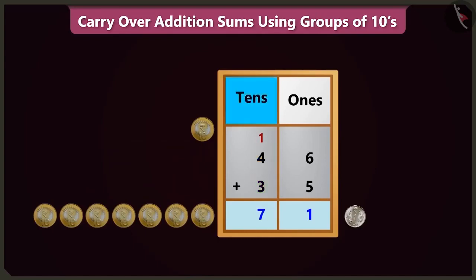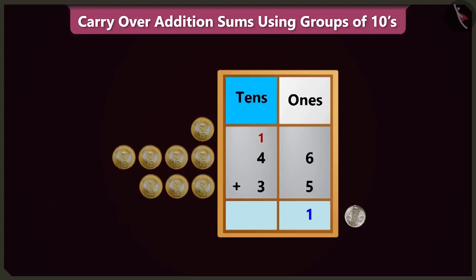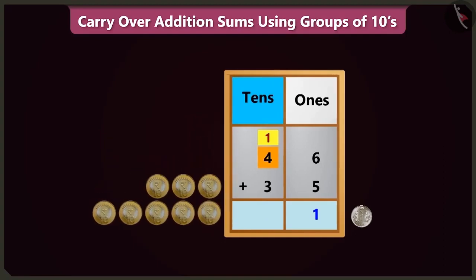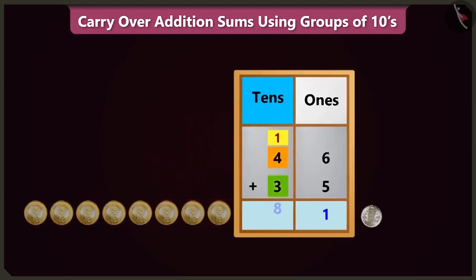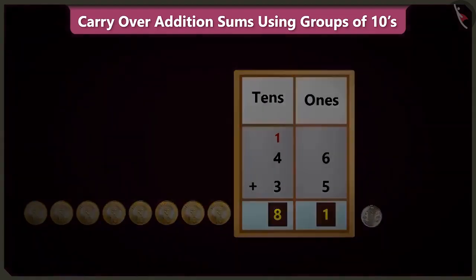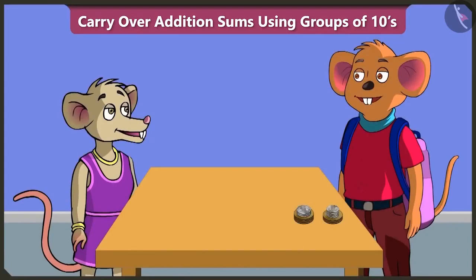Chichi, you did not count the carry-over written in the tens box. Oh, I made a mistake. Adding the carry-over 1 in the tens box to 4 makes 5, and adding 5 and 3 makes 8. Now you counted right. The total amount is 81. Very good, Chichi. But while doing addition, don't forget to count the carry-over number as well. I will definitely remember.